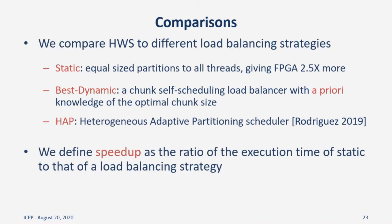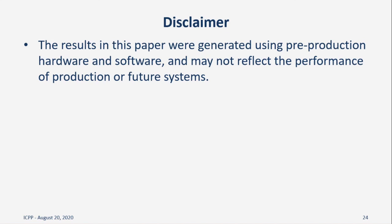We compare HWS to a variety of other load balancing strategies. The first is static, in which equal workloads are given to all threads, but the FPGA is given two and a half times more on account of its better performance. This strategy represents minimal load balancing effort and acts as our baseline. Best dynamic is a chunk self-scheduler with some a priori knowledge of the optimal chunk size, obtained by sweeping over all chunk sizes for each configuration. This is unfeasible in practice but represents what is possible with a dynamic strategy. Lastly, we have HAP, a representative of the current state of the art — an adaptive chunk self-scheduler that learns the optimal chunk size during processing. These results were collected on Intel pre-production systems, and as a result, any results shown may not reflect the performance of Intel production machines.